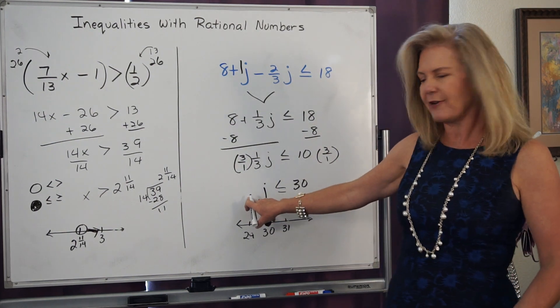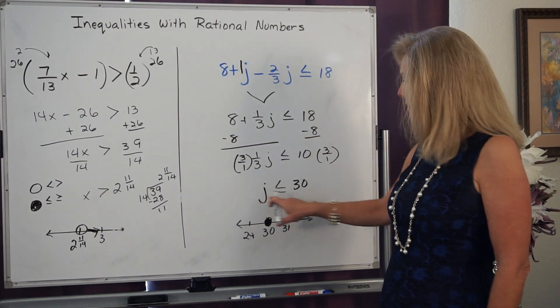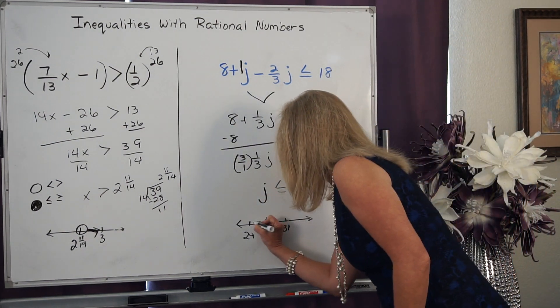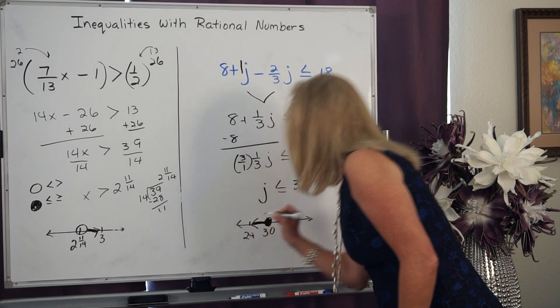And I read it from the side of my variable, all numbers that are less than. And I put my arrow in the direction of all numbers less than.